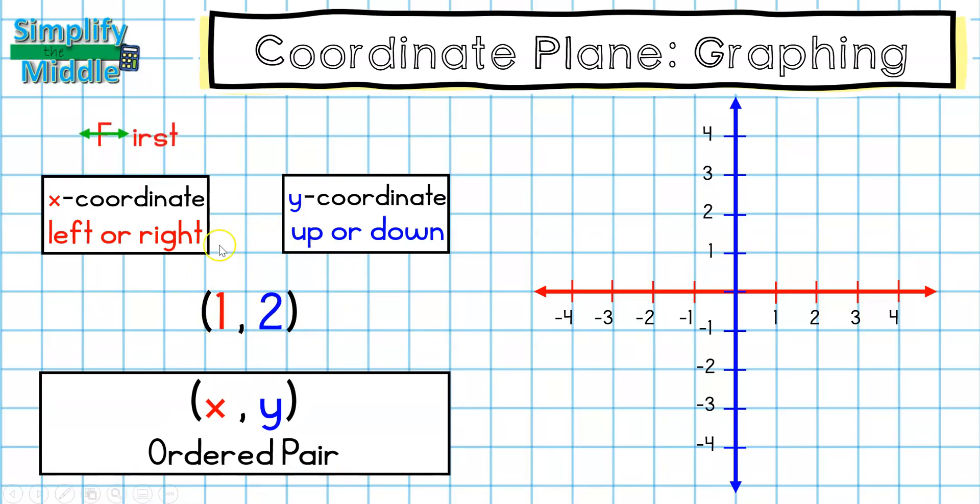When I graph 1, 2, I'm going to first travel 1 and second travel 2. So let's take a look at what that looks like when I'm graphing on the coordinate plane. I'm going to always start here at my origin. And from my origin, I'm looking at my x-axis first. It tells me to travel 1 from my ordered pair. So I'm going to travel from my origin 1 to the right.